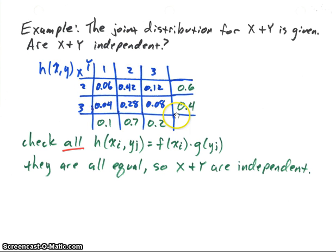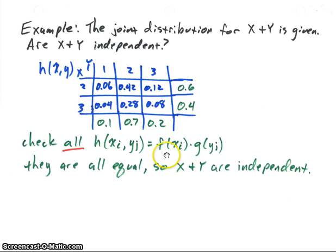It worked for all of them. Since the function H equals the multiplication of our two marginal functions for every combination of X and Y values, we can therefore say that X and Y are independent random variables.